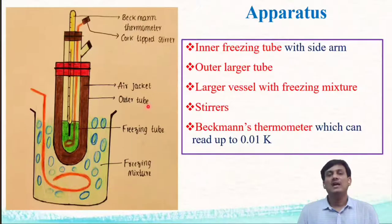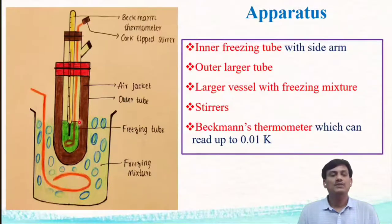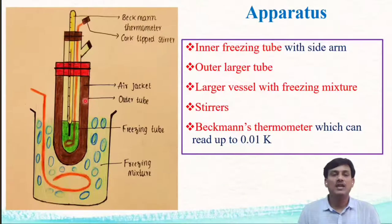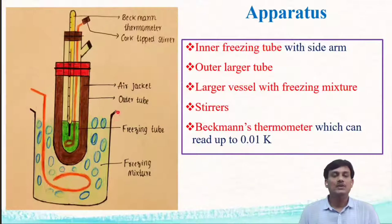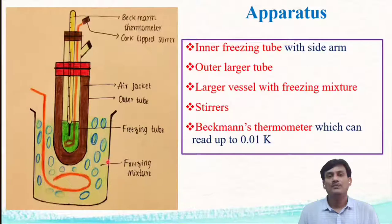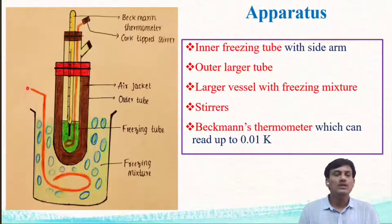In Beckman's method, the apparatus consists of an inner freezing tube fitted with a Beckman's thermometer and a platinum stirrer. This inner freezing tube is fixed within an outer tube, and between the inner and outer tube there is a gap. This gap acts as an air jacket which prevents sudden cooling of the inner tube. There is also a larger vessel containing the freezing mixture of ice and sodium chloride, which is stirred with a platinum stirrer to homogenize the temperature.